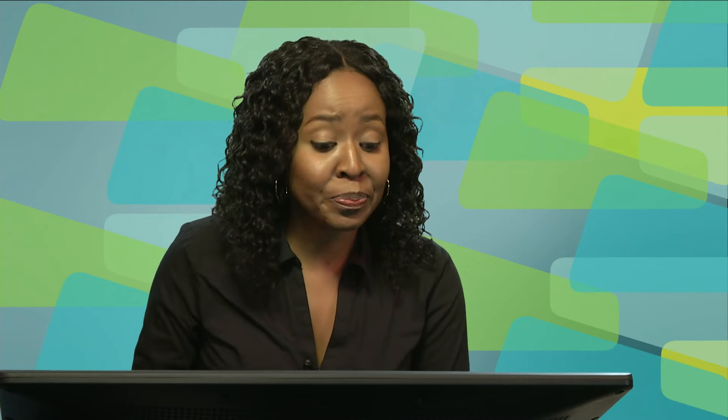I'm going to show you a little example of how Compound Interest is normally represented in this particular example. So let's look at what we are given here. Prince applied for a loan of $30,000 and the loan conditions are given below. We are given an initiation fee and a monthly loan service fee. Be careful when it's said to be once off.